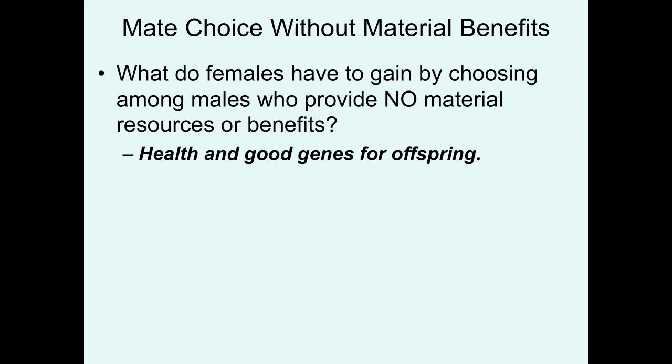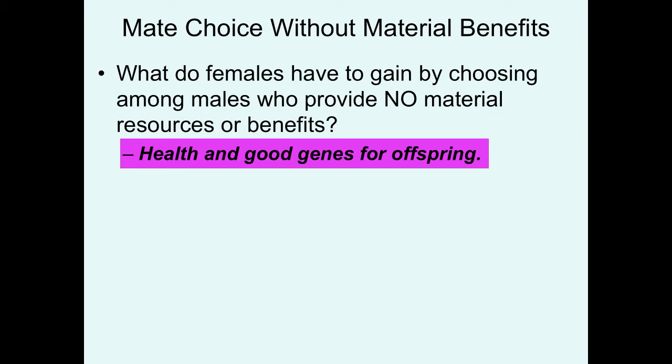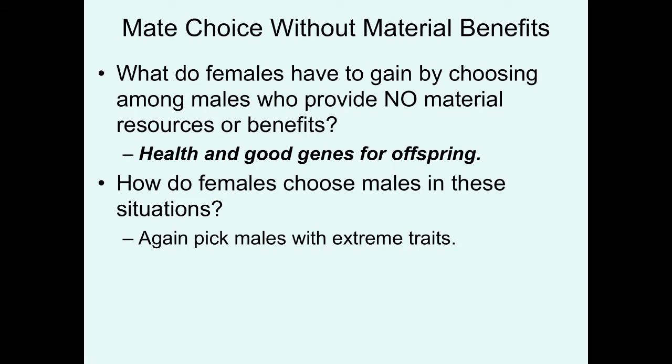Let's move on to talk about situations in which females may choose among males that are providing absolutely no material benefits. Why would females even care who they mate with in these situations? What they get out of it is they're trying to make sure they're mating with the healthiest males that possess the best genes, in hopes that they're going to be able to pass on this good health and good quality genes to their offspring. Again, they're trying to pick males with the most extreme traits, because these extreme traits are honest signals of a male's health and genetic quality.